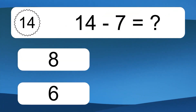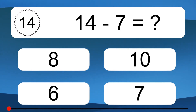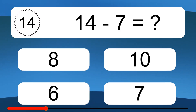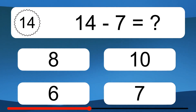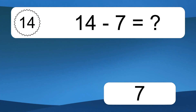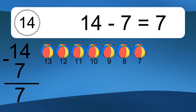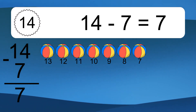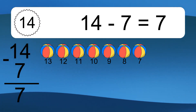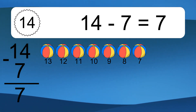14 minus 7 equals what? 14 minus 7 equals 7. Let's count it: 13, 12, 11, 10, 9, 8, 7.